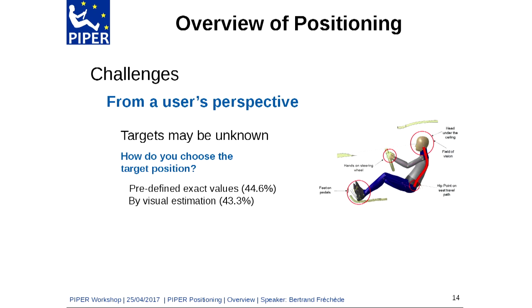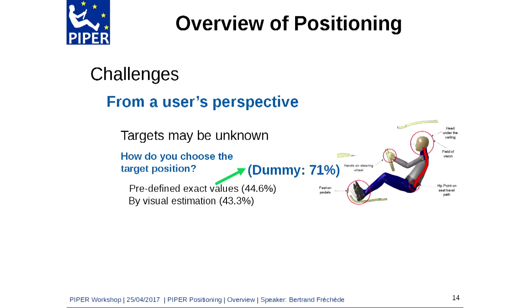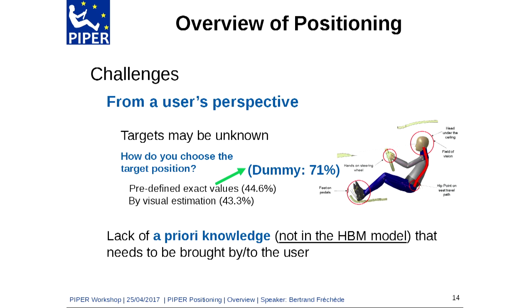It is also interesting to see that a high proportion of users would use visual estimation to position an HBM, whereas for a dummy they use either guidelines or known angle values. This reflects the lack of a priori knowledge — it is not embedded in the HBM and needs to be brought to the user.